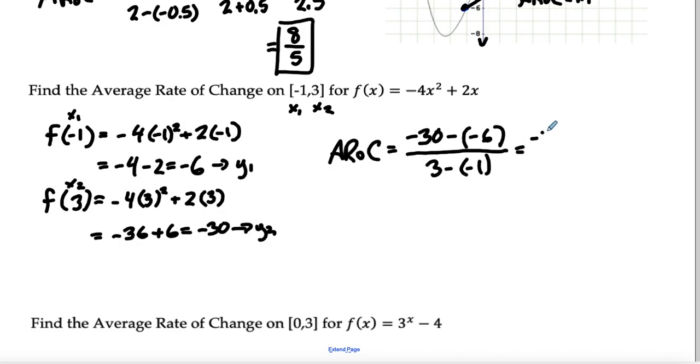We're going to simplify this. We've got negative 30 plus 6. 3 plus 1 is going to give us negative 24 over 4.